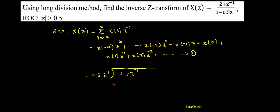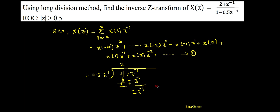Since ROC is |z| > 0.5, we expand in negative powers of z. First, multiply 1 by 2 to get 2, and multiply the denominator term: 2 × (1 - 0.5z⁻¹) gives 2 - z⁻¹. Subtracting: (2 + z⁻¹) - (2 - z⁻¹) = 2z⁻¹. So the remainder after the first step is 2z⁻¹.